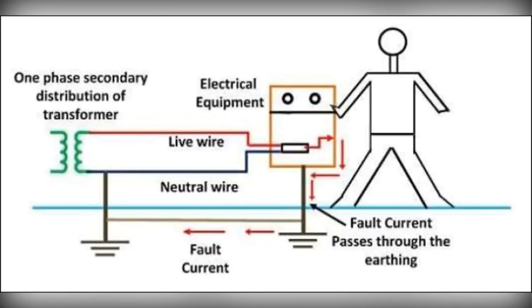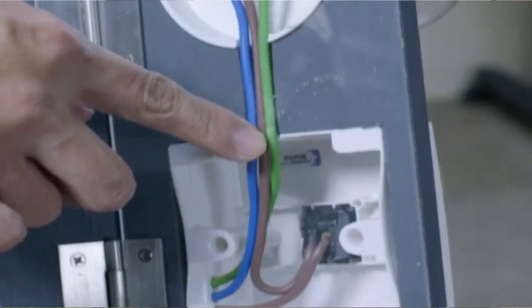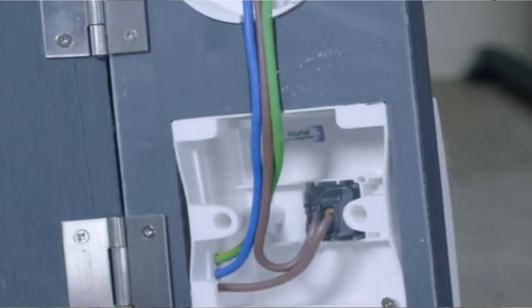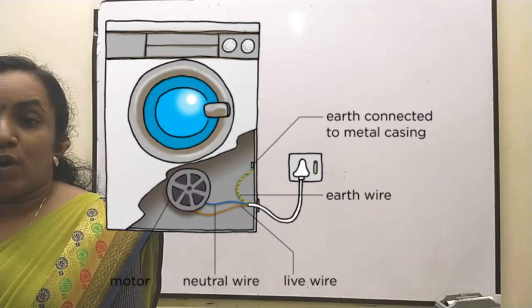If due to short circuiting an excessive current flows through the live wire, it will pass to earth through the earth wire, provided there is proper local earthing. Otherwise the live wires may overheat and cause fire. Hence, proper earthing saves us from fire. Earthing for appliances is also essential for electrical appliances such as refrigerators and toasters; all these appliances have metallic cases provided with an earth terminal.